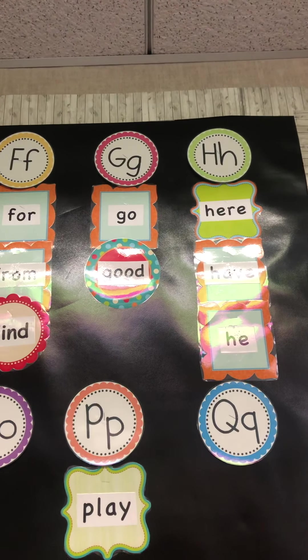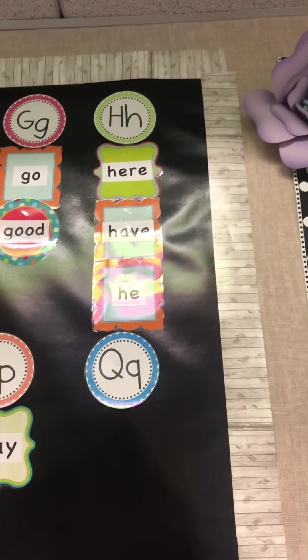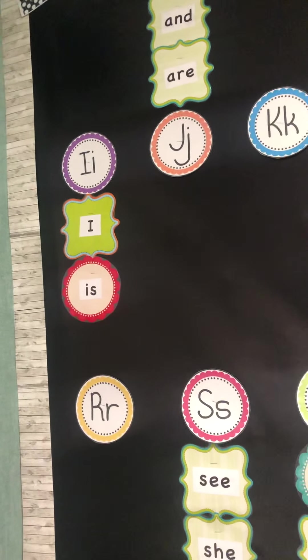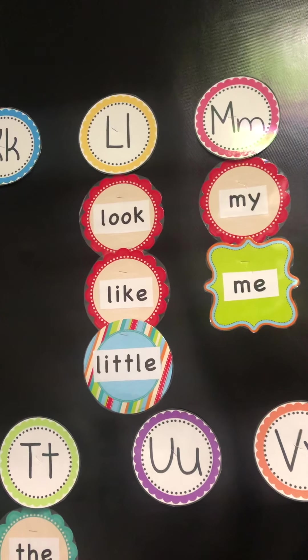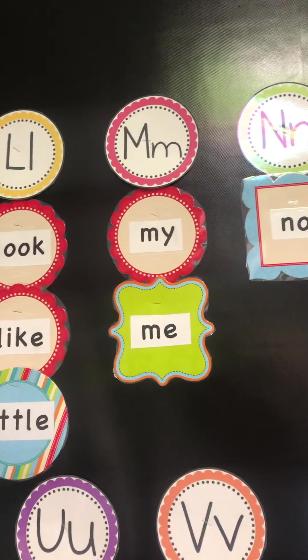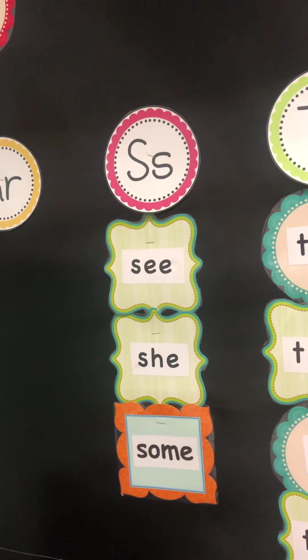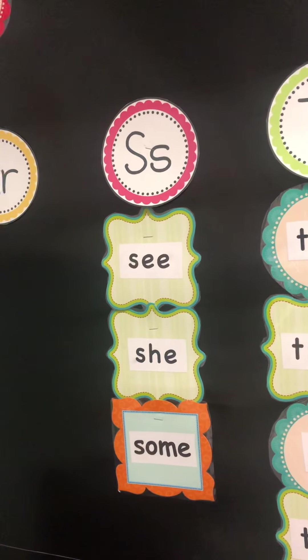Under G is 'go' and 'good.' Under H is 'here,' 'have,' and 'he.' Under I is 'I' and 'is.' Under L we have 'look,' 'like,' 'little.' Under M we have 'my' and 'me.' Under N we have 'no.' Under P, 'play.' Under S is 'see,' and S-H gives us 'she' and 'some.'